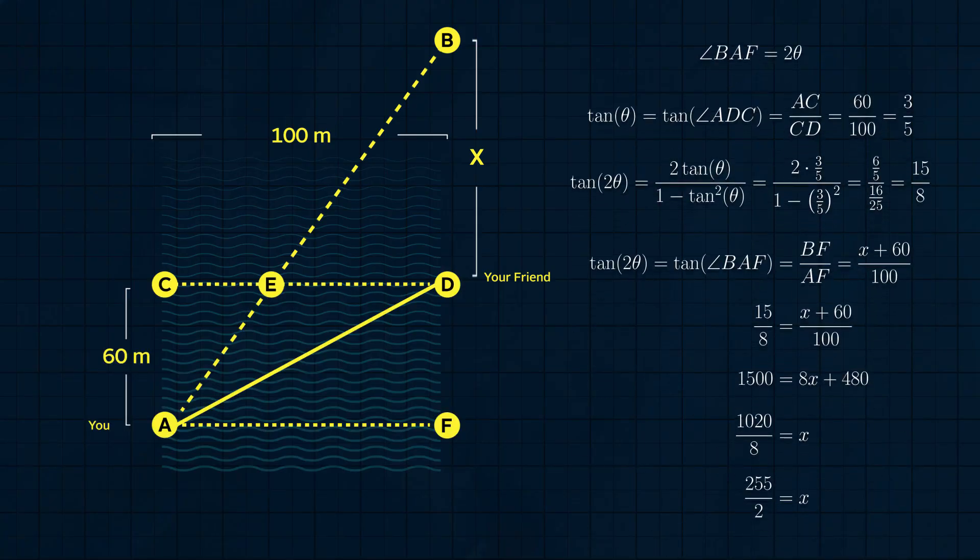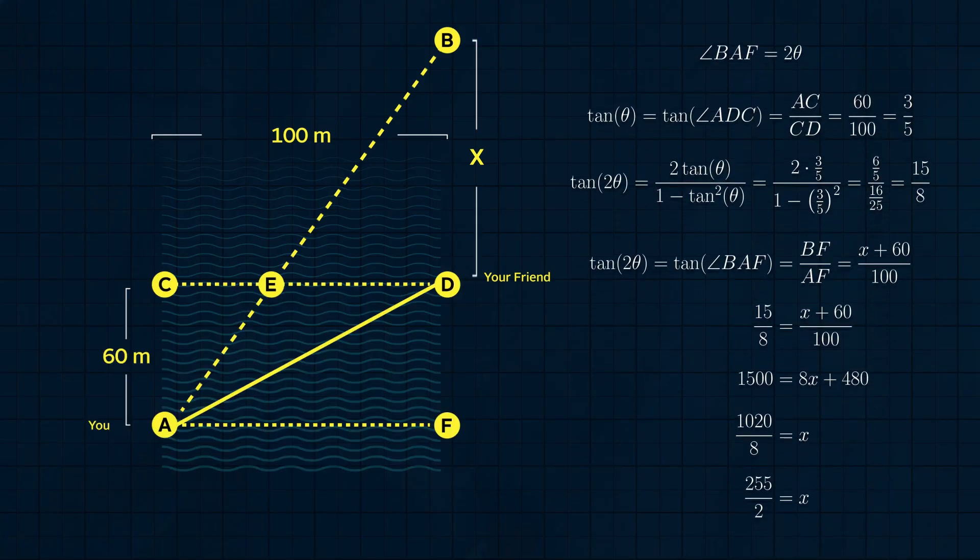We already know that tan theta, which is opposite over adjacent, so is AC over CD, or 3 fifths. By the double angle formula for tangent, tangent of 2 theta is 2 tan theta over 1 minus tan squared theta, and plugging in 3 fifths for tan theta gives 15 eighths.